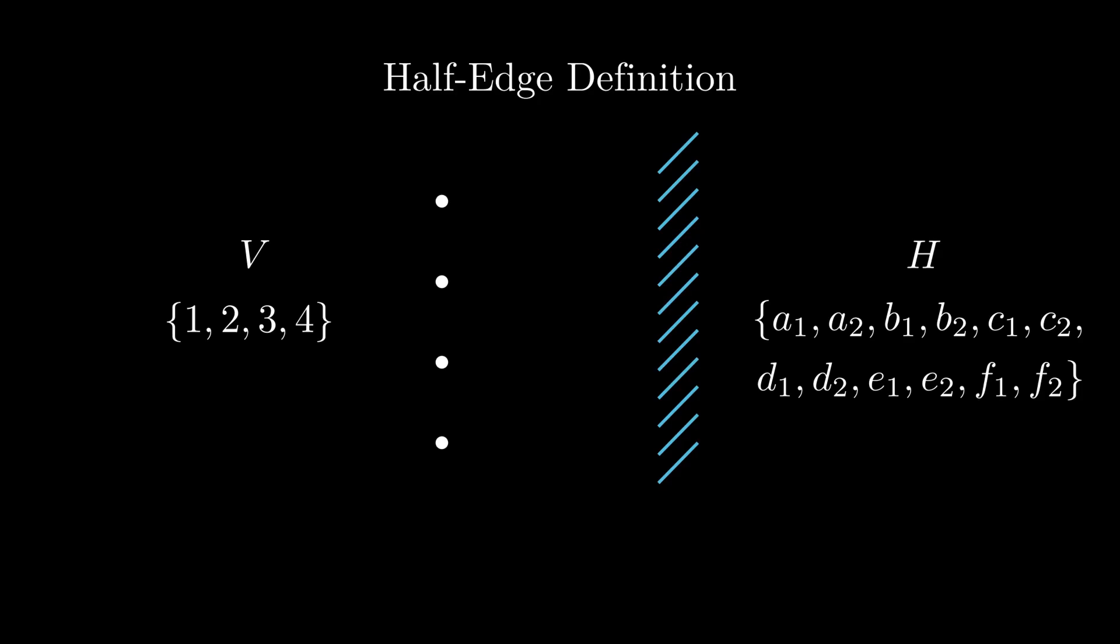The perfect object in mathematics to relate two sets is the function, and we'll need a couple. Firstly we have a map which takes a half-edge and attaches it to a vertex. If we do this for all of the half-edges, we end up with a bunch of vertices with spokes coming off of them.